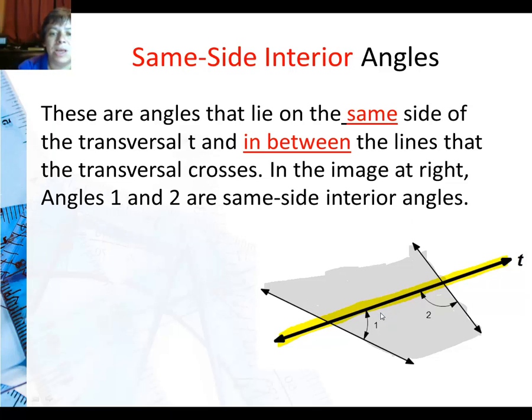And there's my transversal. Same side, you can see angle 1 here and angle 2 are both in between the two lines and on the same side of the transversal. So that makes them same-side interior angles.